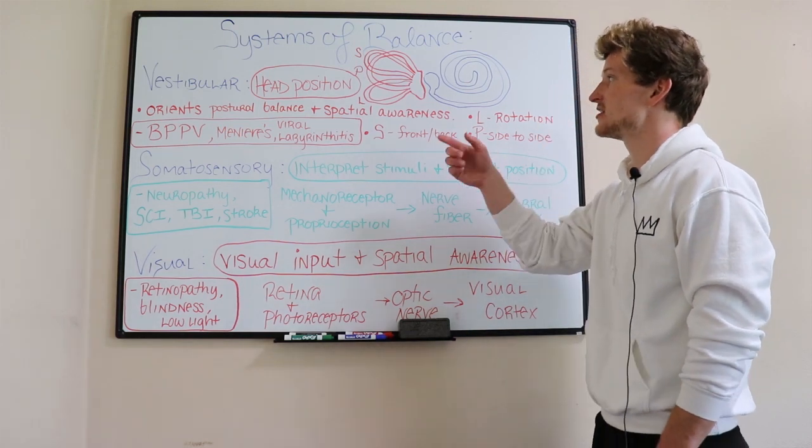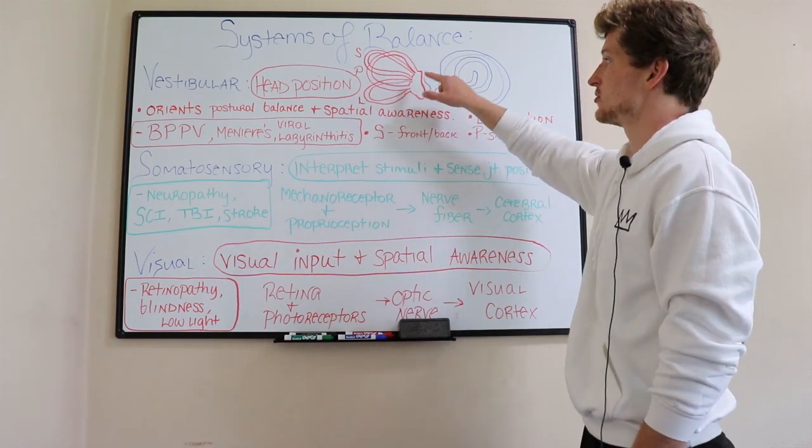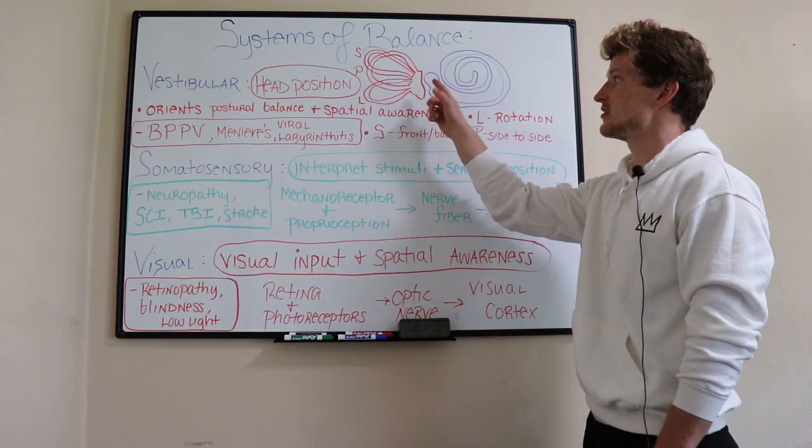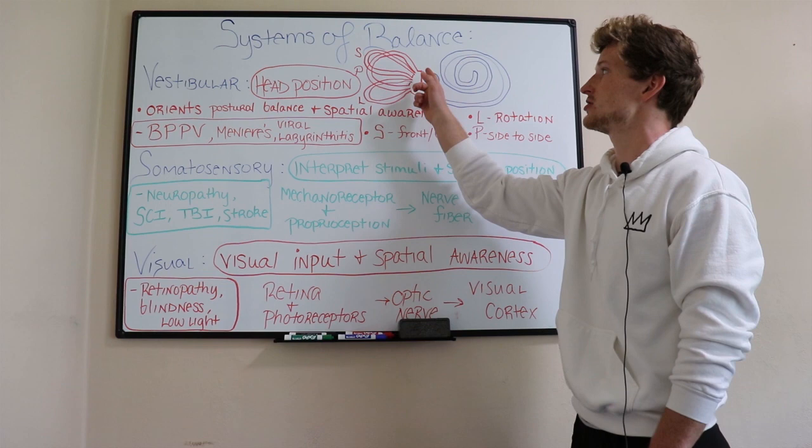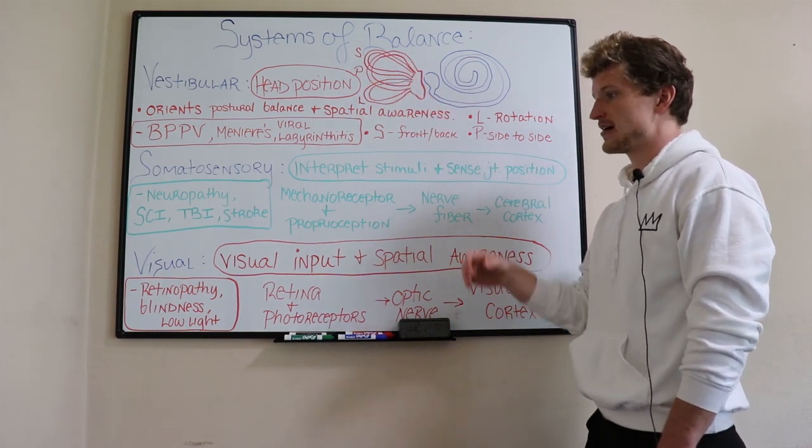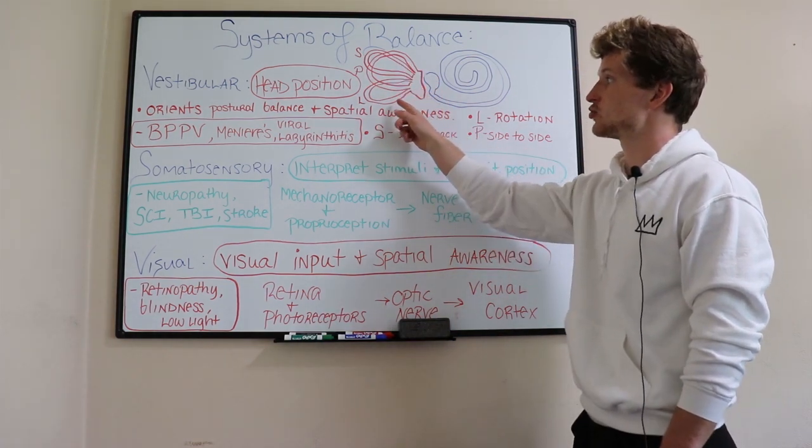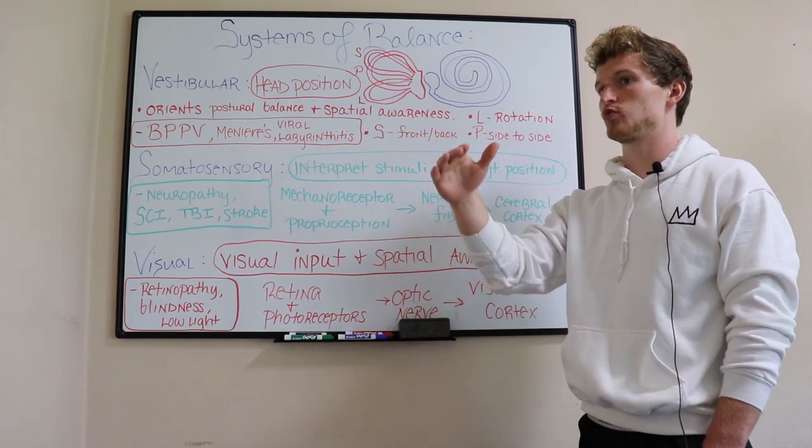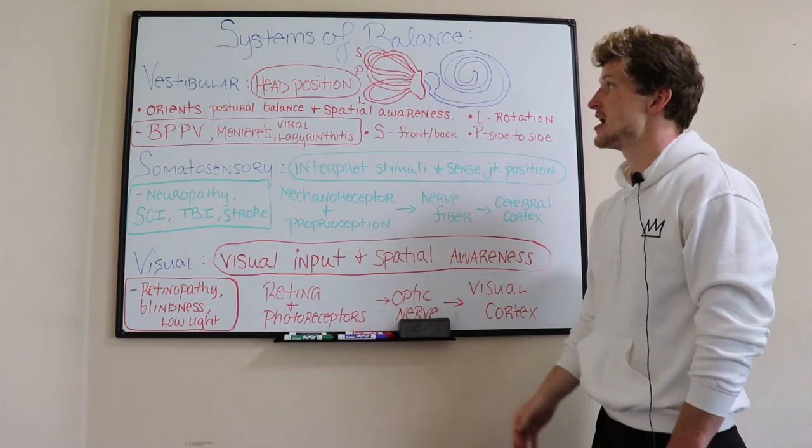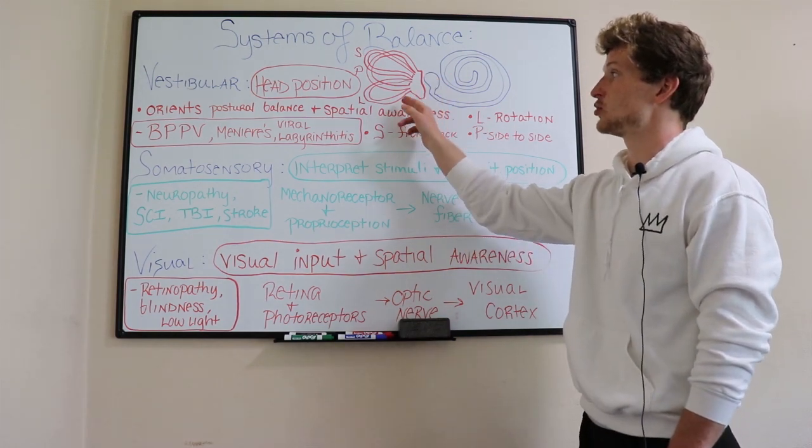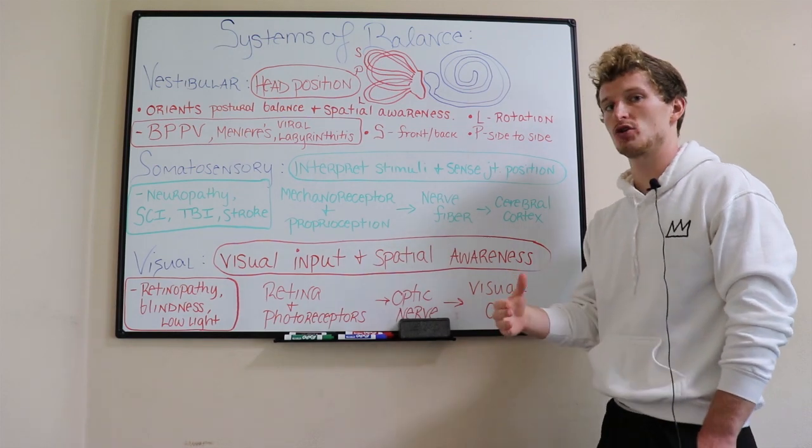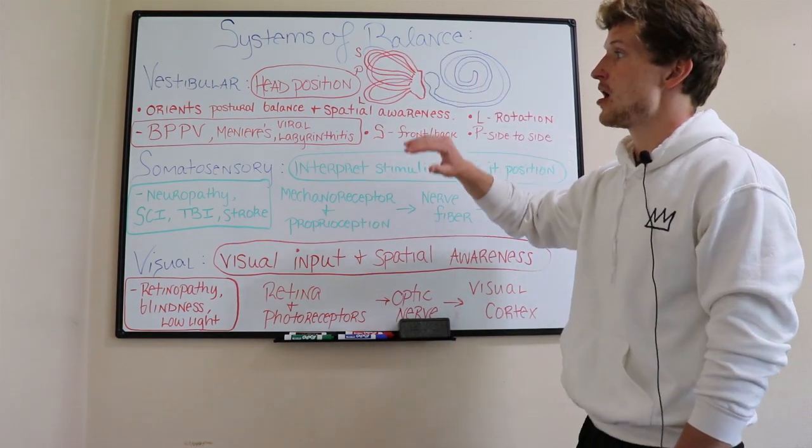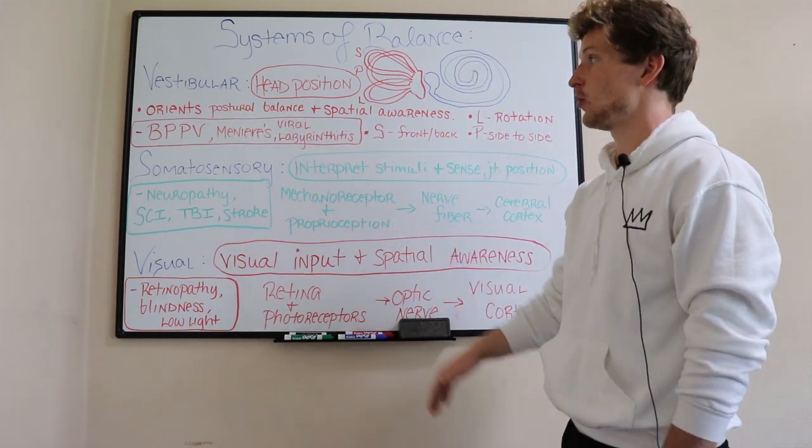The first one is the vestibular system, which attaches to our cochlear system. The vestibular system is a series of three semicircular canals filled with endolymph fluid that has crystals within it. Those crystals run over hair projections, and as they move, they give us an idea of which way the endolymph is traveling, which tells us which way our head is moving through space. All of that input helps us orient postural balance and spatial awareness.